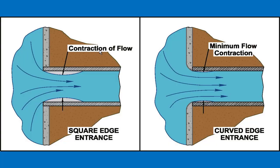Why would the inlet edge of a culvert control capacity rather than the barrel condition? At a sharp-edged inlet, flow contracts — water doesn't fill all the available space due to a quirk of fluid dynamics. A smooth-edged inlet contracts less, showing minimum flow contraction, while a sharp edge produces a fairly large contraction. That contraction limits the capacity of the inlet edge. Just downstream of the inlet the pipe flows full with greater capacity. Inlet control simply means the inlet edge is limiting how much water can pass due to this flow contraction.